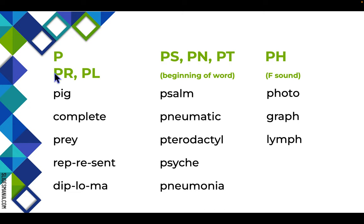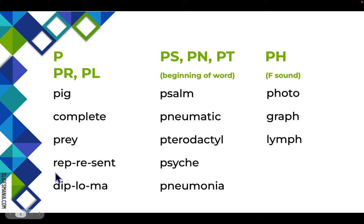The letter P by itself, or with the blends PR and PL, just says /p/, like in 'pig,' 'complete,' or 'prey.' Usually with the blends, these consonants stay together in the same syllable. However, there are some words where they split up, like in 'represent' and 'diploma.' Be sure to watch my syllable division boot camp, rule 4, about dividing before or after blends.